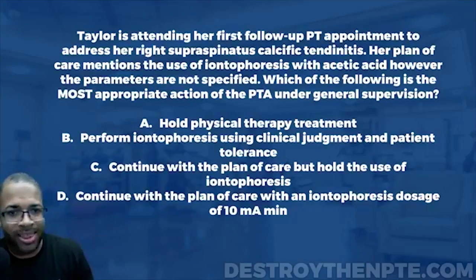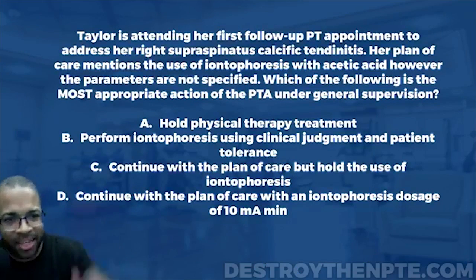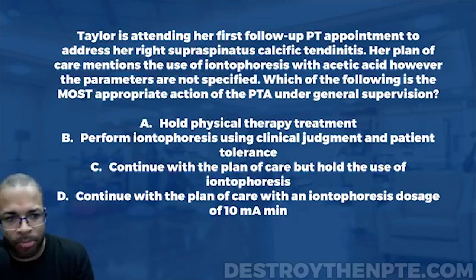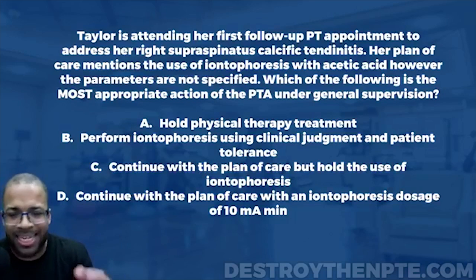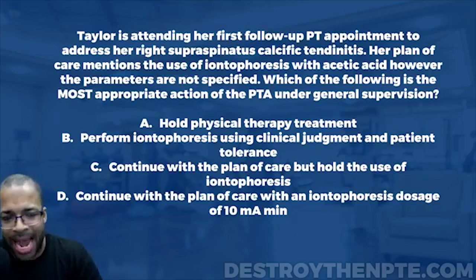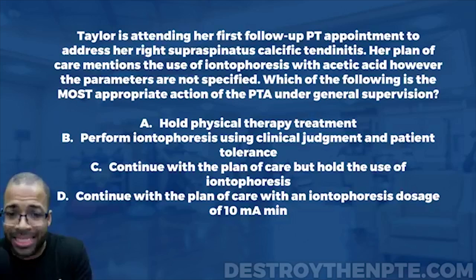For this week's Challenge Wednesday question, we have our patient Taylor. Taylor is attending her first follow-up PT appointment to address her right supraspinatus calcific tendinitis. Her plan of care mentions the use of iontophoresis with acetic acid, however the parameters are not specified. Which of the following is the most appropriate action of the PTA under general supervision?